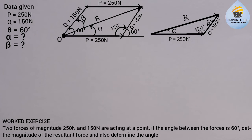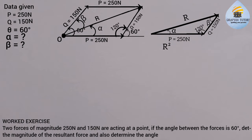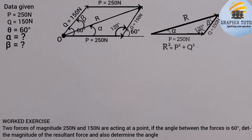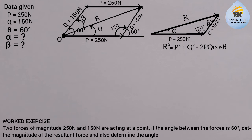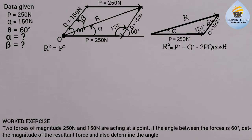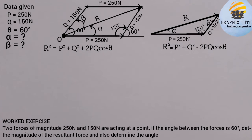Applying the cosine rule in the triangle, the resultant R squared equals P squared plus Q squared minus 2PQ cos(theta), where theta is the included angle of 120 degrees. In the parallelogram formula, it becomes R equals the square root of P squared plus Q squared plus 2PQ cos(theta), using 60 degrees. Notice the difference: one has a minus and the other has a plus.